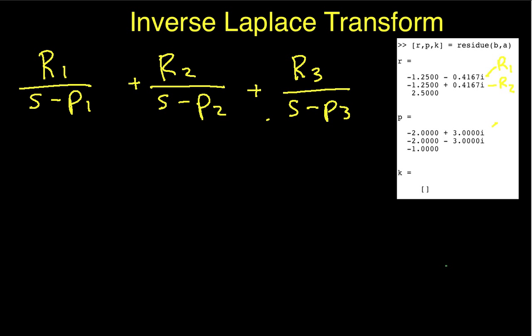This represents P1, and this represents P2. And again, you'll notice that P1 and P2 are complex conjugates of each other. We then have an R3 and a P3. You'll notice that R3 and P3 are real,